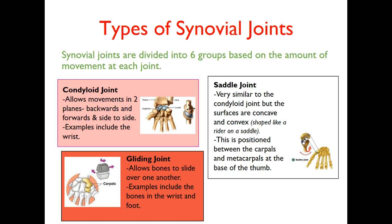The next type is a gliding joint. A gliding joint is a little more complicated — it allows bones to actually slide over one another. Think about the small bones in your wrists and feet, like the carpals in the hand. As you make a fist, your bones start to slide over each other. So a gliding joint is where bones actually glide or slide over one another.